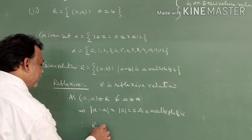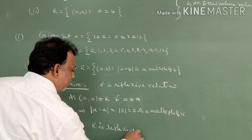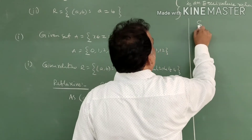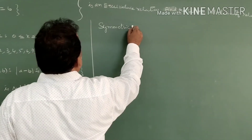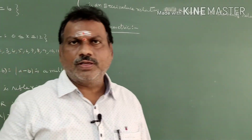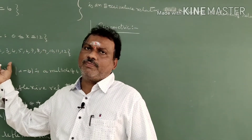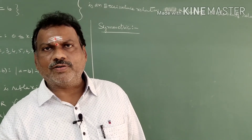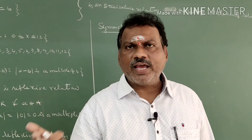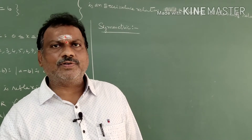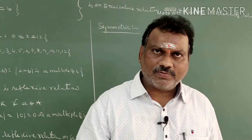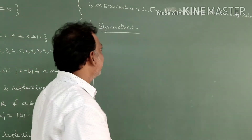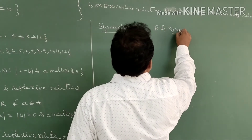Therefore R is a reflexive relation on set A. Now we prove symmetric. If (a,b) belongs to R, there must be (b,a) also. According to this relation, mod of a minus b is a multiple of 4. Obviously mod of b minus a is also a multiple of 4 — for example, taking a=4 and b=8: mod(4−8)=mod(−4)=4, which is a multiple of 4; and mod(8−4)=4, also a multiple of 4. So R is symmetric.